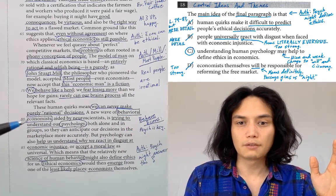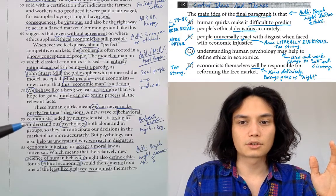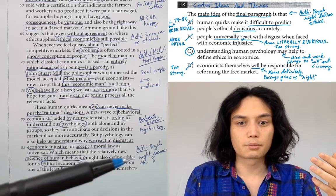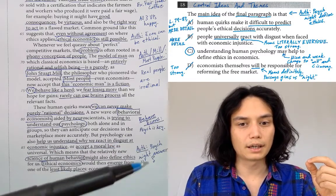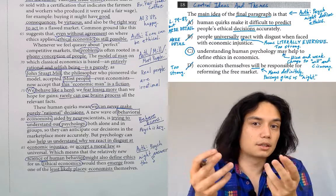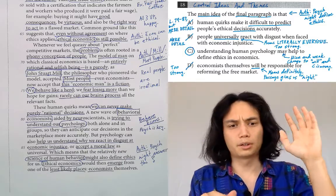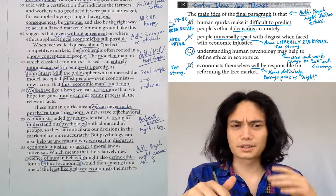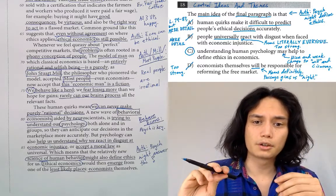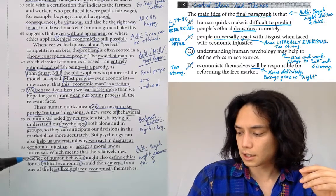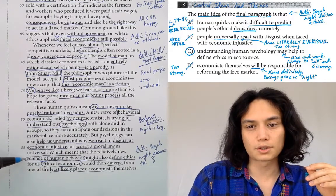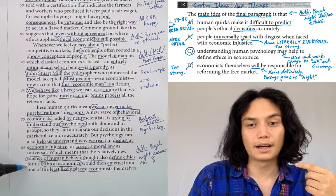Going to the passage, behavioral economists, aided by neuroscientists, are trying to understand our psychology. Behavioral economists studying psychology — that's one of the main claims according to our notes. The next main claim is from the author's viewpoint: psychology might answer the question of how do you define ethics in economics? Viewpoint one, viewpoint two — Adam Smith says ethics is about consequences, Aristotle says ethics is about character, there's a third group who think ethics is about actions. The author here is saying that psychology might help us answer that question, and the passage says the relatively new science of human behavior might also define ethics for us.